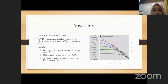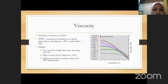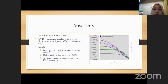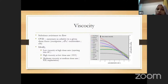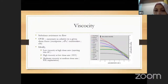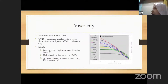Viscosity is the solution's resistance to flow, measured in relation to shear force and expressed in centipoise or centistokes. For an ideal OVD, it should have low viscosity at high shear rates when injecting through a 21-gauge cannula, high viscosity at low shear rate during capsulorhexis, and moderate viscosity at medium shear rate during IOL implantation, since a bigger cannula is used.